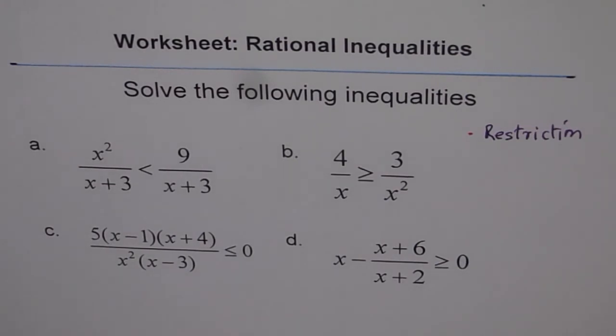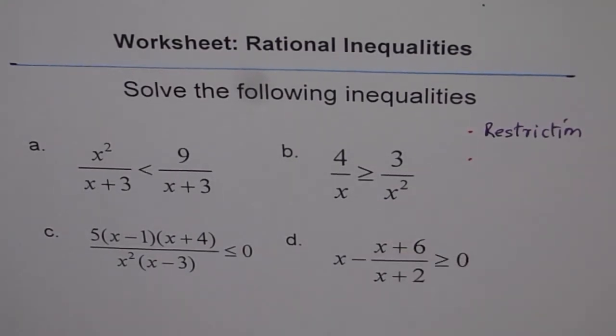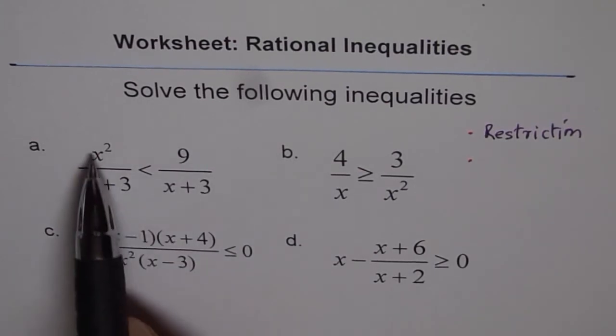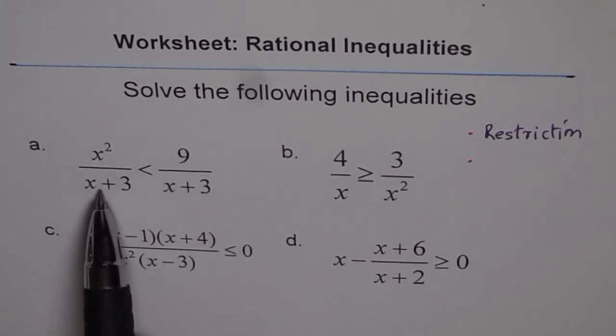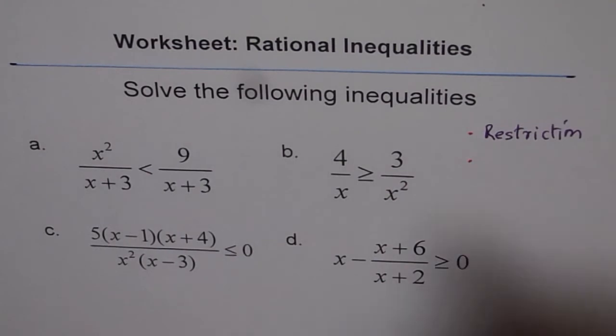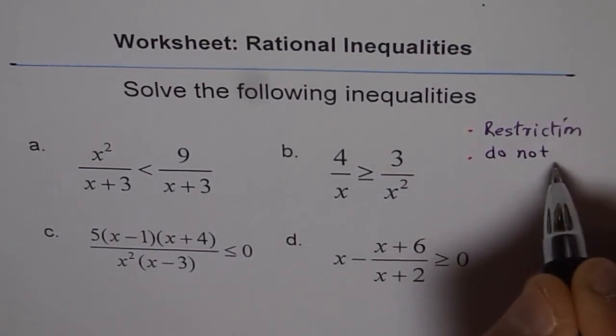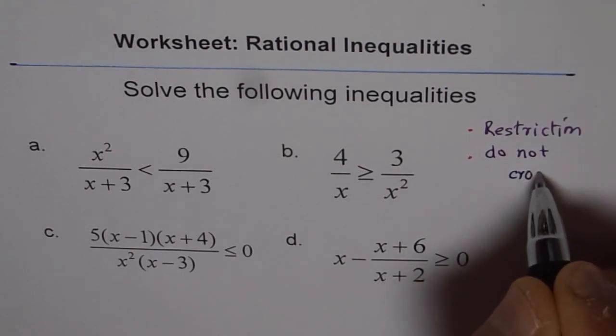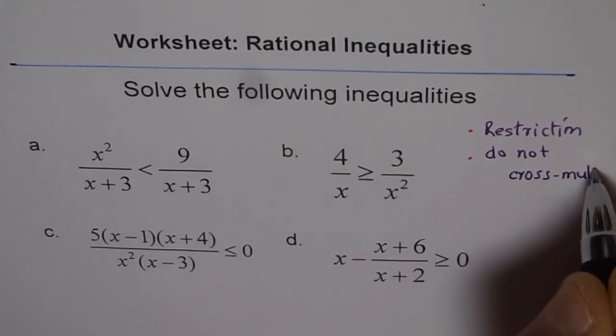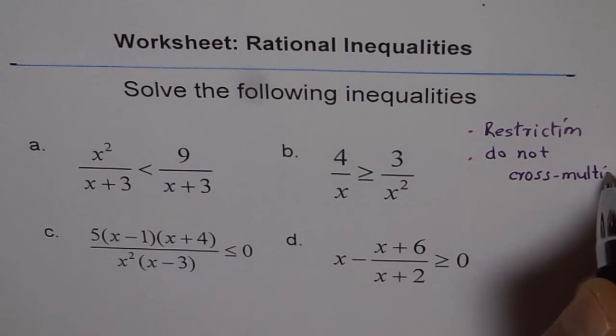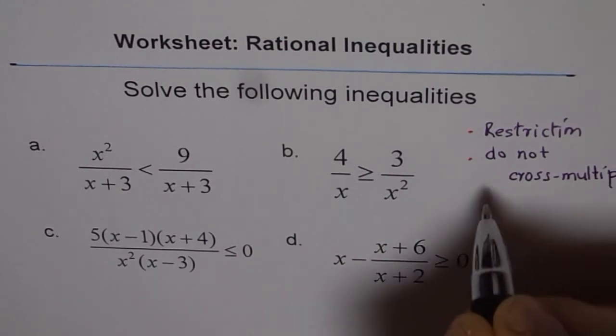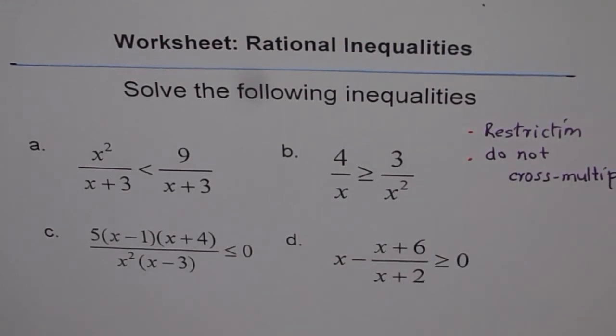So first thing, write down restrictions. Second thing is never cross multiply. Don't do that as you do in equations. You are not allowed here, otherwise you will get the wrong answer.